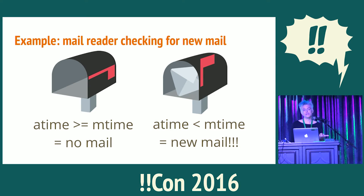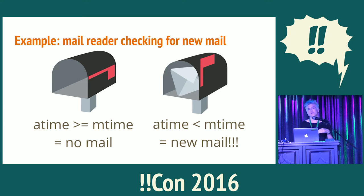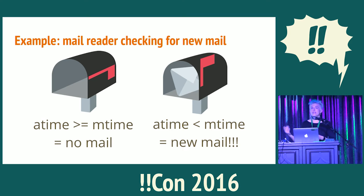As an example of how timestamps are used: if you have a mail reader which reads mail stored in a file, and a mail receiving program like SendMail that appends new mail to the end of that file, you can use the timestamps to figure out if there's new mail. If the A-Time is greater than, or more recent than, the modified time, then you know you've already checked it since the last time somebody put mail in the mailbox. If the A-Time is less than the M-Time, you know you have new mail.